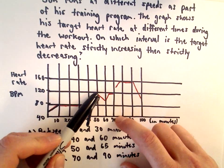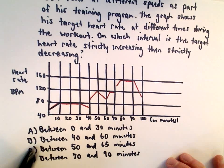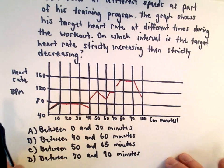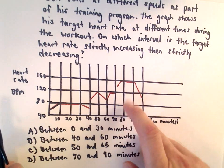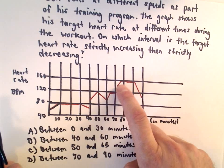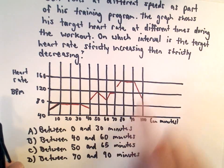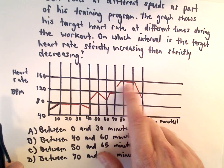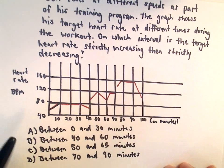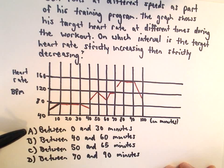Answer choice D says between 70 and 90 minutes. Well, in that case, his heart rate is going up and then it stays constant. At 90 minutes it stops. So it's increasing and then it stays constant, so it's almost like the same thing as answer choice A.